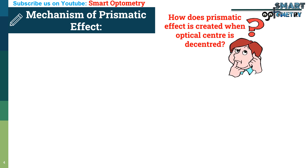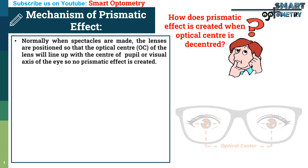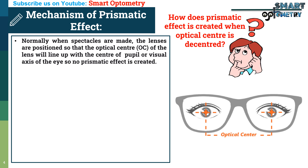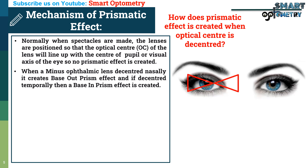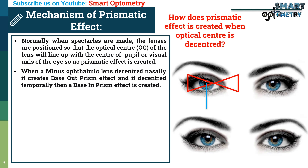You might be thinking: how is prismatic effect created when the optical center is decentered? Normally, when spectacles are made, the lenses are positioned so that the optical center of the lens lines up with the center of the pupil or visual axis of the eye, so that no prismatic effect is created. When a minus ophthalmic lens is decentered nasally, it creates a base out prism effect. And if decentered temporally, a base in prism effect is created. In the figure, you can see that when a minus lens is decentered nasally, the central rays pass through a prism that is base out, and when decentered temporally, through a prism that is base in.